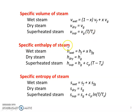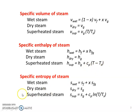The specific enthalpy of the steam: for wet steam, H_wet equals H_F plus X into H_FG. For dry steam, H_dry equals H_G. For superheated steam, H_super equals H_G plus C_P into (T minus T_S). The specific entropy of the steam: for wet steam, S_wet equals S_F plus X into S_FG. For dry steam, S_dry equals S_G. For superheated steam, S_super equals S_G plus C_P into logarithm of T by T_S.